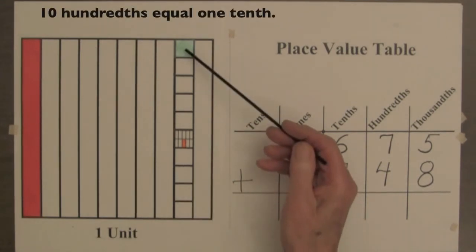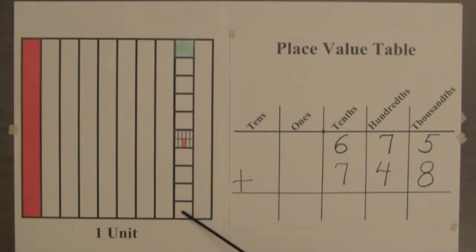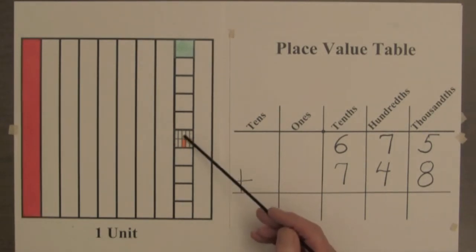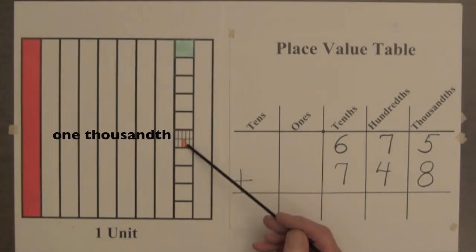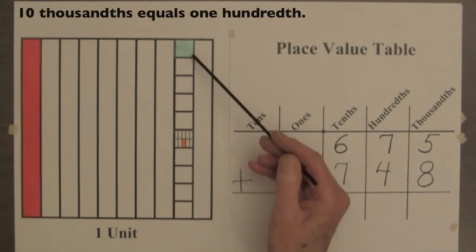Ten of these small green squares equal one-tenth. This tiny orange part is one of a thousand equal parts in the unit, so we call one of these one-thousandth. And ten of these thousandths equals one-hundredth.